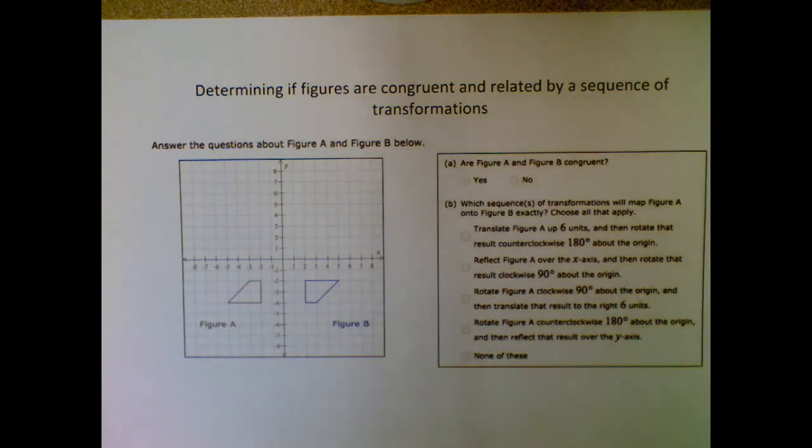So if two things are congruent, two shapes are congruent, then there should be a series of transformations that we can use to turn one into the other, or make it move into where the other one is. So what we're doing here is we're going to see if they're congruent, and these are.